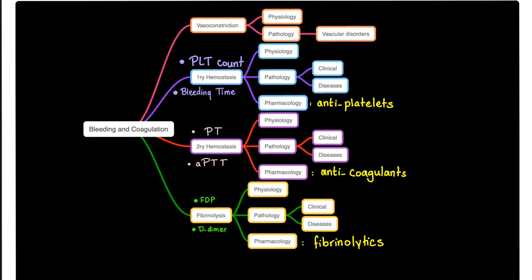Steps of bleeding and coagulation: vasoconstriction, primary hemostasis, secondary hemostasis, and fibrinolysis. Primary hemostasis — the platelet plug. What are the lab tests? Platelet count and bleeding time. What are the drugs that inhibit primary hemostasis? They are called antiplatelets, and we divide them into three groups.